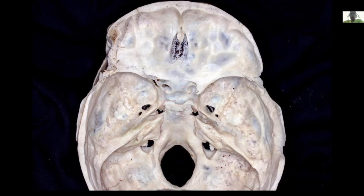The most prominent extensions into the endocranial surface become recesses on the exocranial surface. In other words, when we look through the nose, we can see most of these structures as recesses. The tuberculum sellae is seen as a recess when viewed endoscopically. The anterior clinoid can also be seen as the lateral optic-carotid recess.